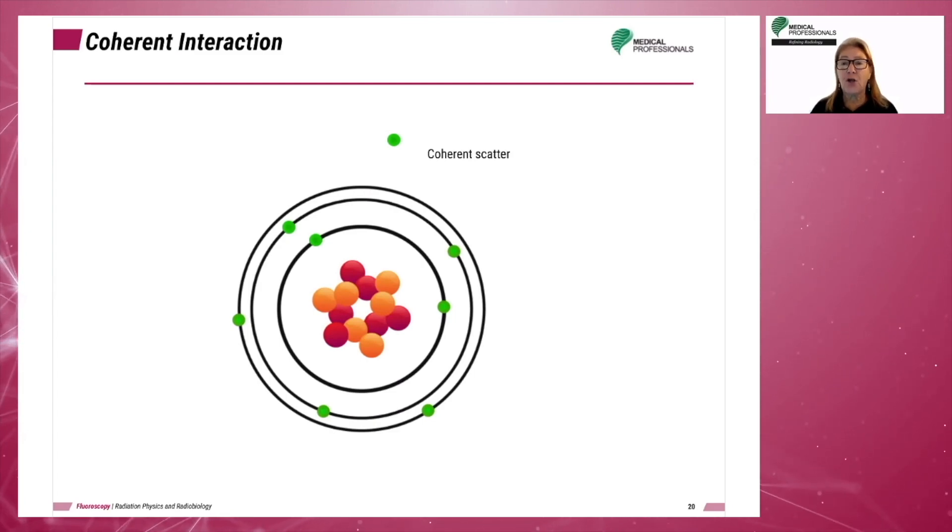The first is coherent interaction. Coherent interaction occurs with x-ray photons with an energy level less than 50 keV. These photons do not have enough energy to interact with an electron, so they bounce off and scatter in slightly different directions.